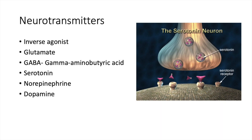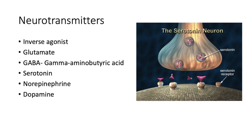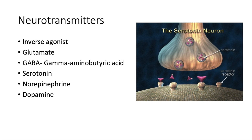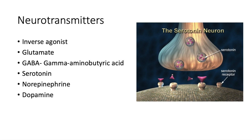Inverse agonists are drugs that produce opposite effects to those produced by the neurotransmitter. Now I'll go through the important neurotransmitters. I already discussed these same neurotransmitters in prior biopsychology videos, but I'll go over them again in the context of abnormal psychology.